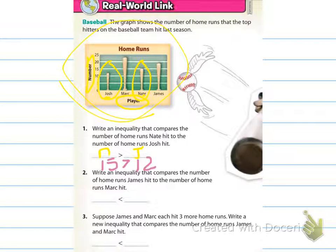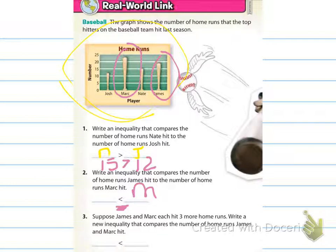Number two says write an inequality that compares the number of home runs James hit to the number Mark hit. We're comparing James and Mark using a less than sign. The alligator wants to eat the bigger number — Mark is the bigger number at 23, and James is smaller at 19. So we can say 19 is less than 23.